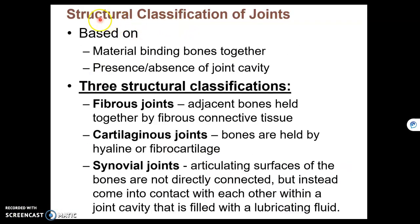Structural classifications are based on anatomy, meaning what is the material that binds the two bones together. Just like functional, there are also three structural classifications: fibrous, cartilaginous, and synovial joints. Each of these three classifications has subclassifications. Fibrous joints have fibrous or tough connective tissue connecting the bones. Cartilaginous joints have cartilage holding the two bones together. And synovial joints have a synovial cavity with synovial fluid connecting the two bones together.